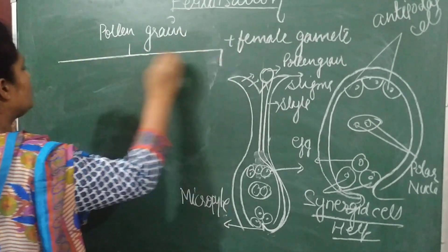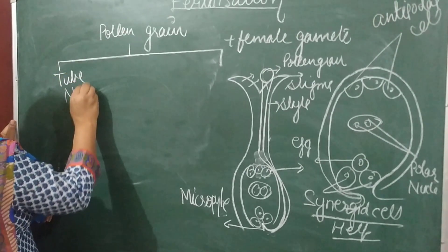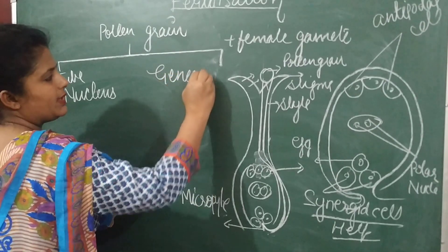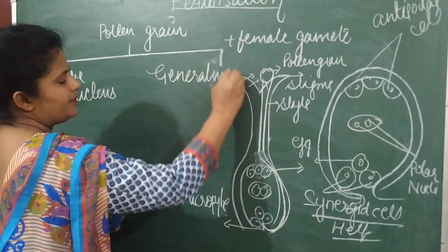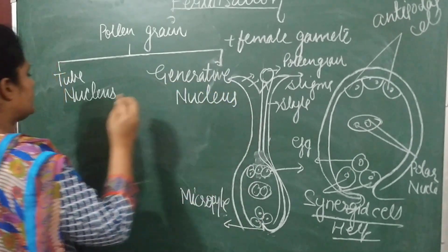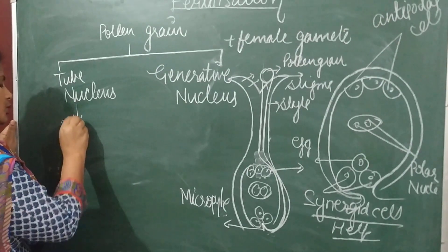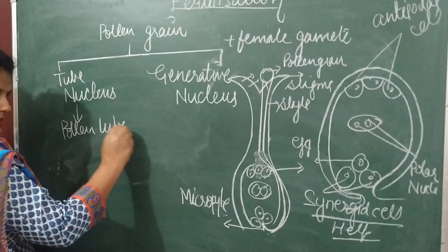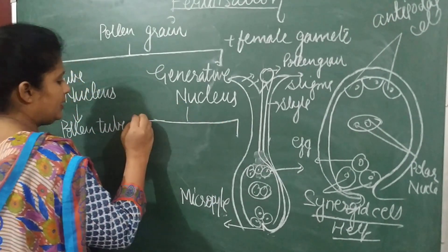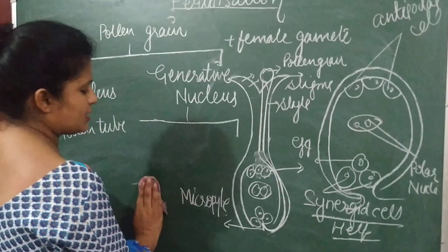The pollen grain divides into two nuclei: one is the tube nucleus and one is the generative nucleus. The tube nucleus helps to produce the pollen tube, and the generative nucleus will divide into two sperm nuclei.